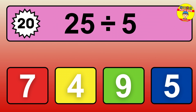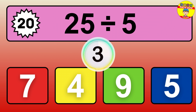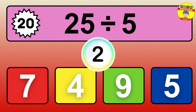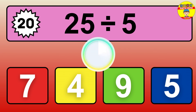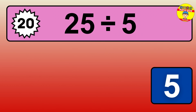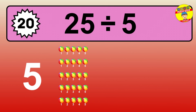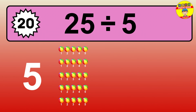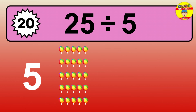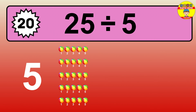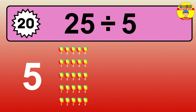25 divided by 5 is… time to think. Let's go to the solution. Divide the number 25 by 5. Each group contains 5 units. So, dividing 25 by 5 results in 5 equal groups. Thus, the result is… 25 divided by 5 equals 5.